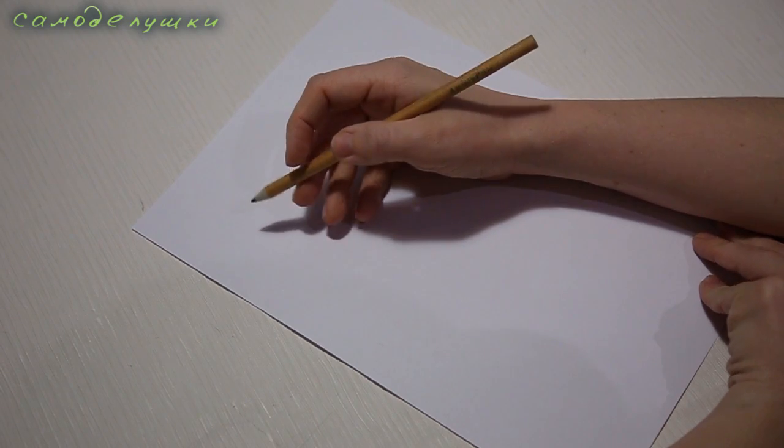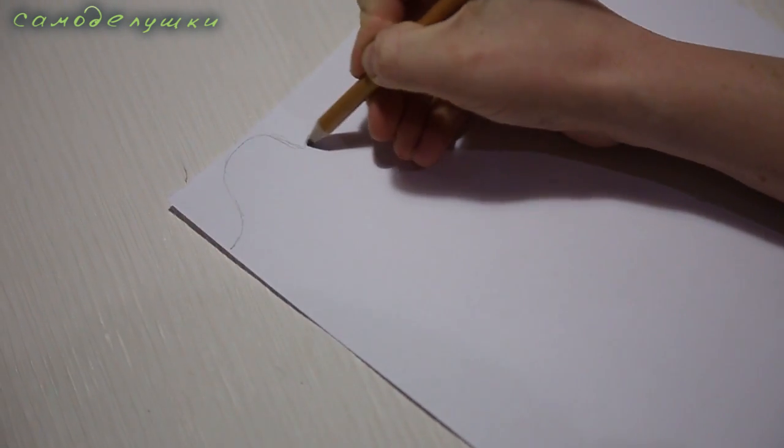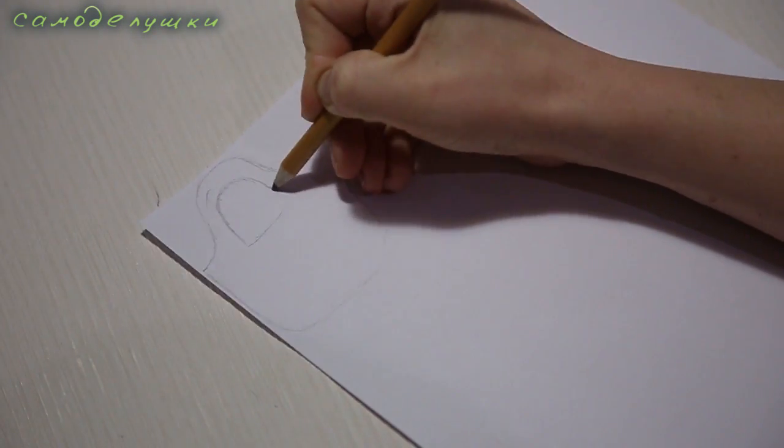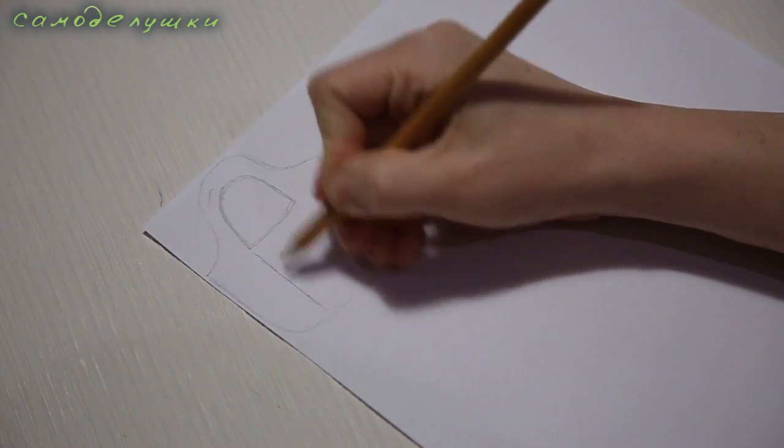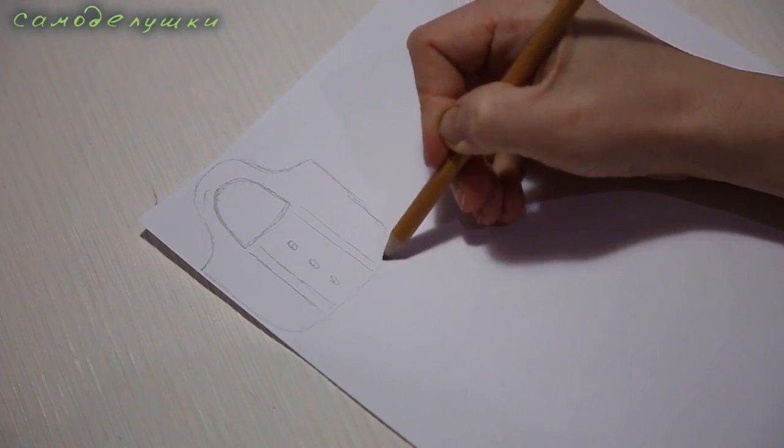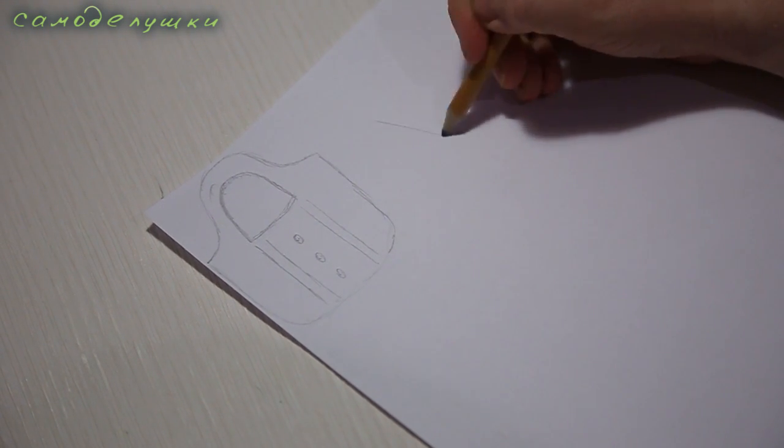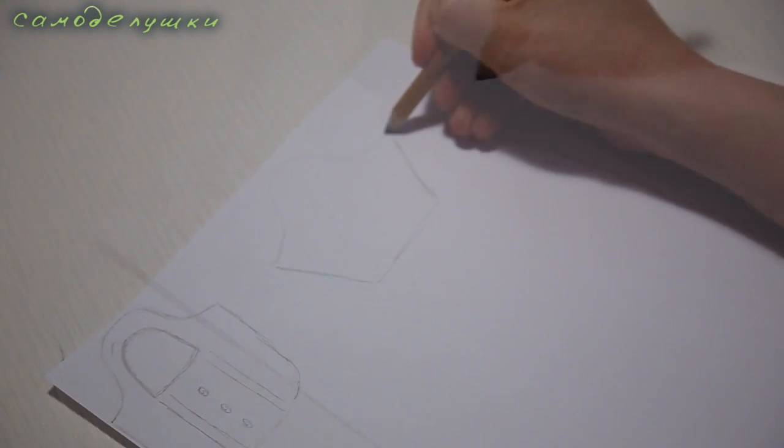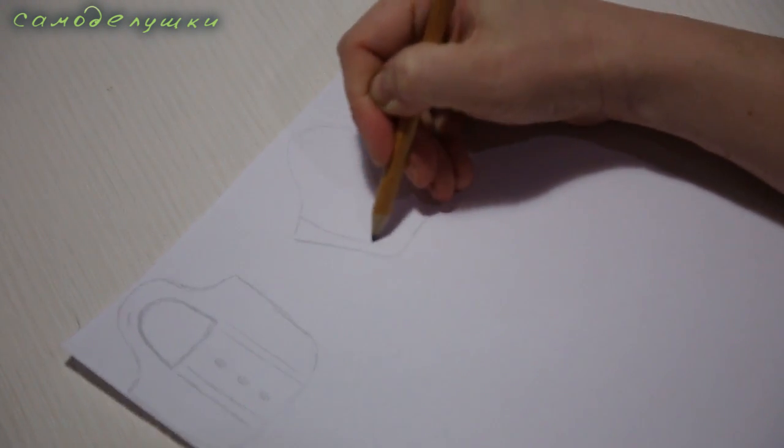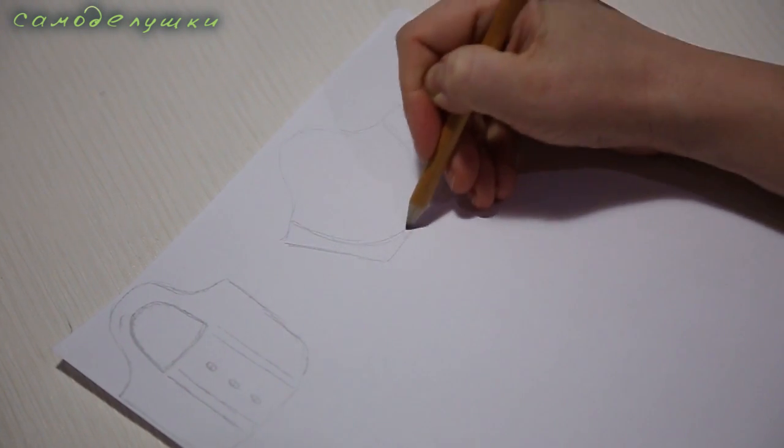First I'll draw a sketch of the future bag. This is approximately what my bag will look like. I can change the shape a little, I can make it in the form of a trapezoid, or I can make it completely round, like this. But everyone does this according to their own preference.